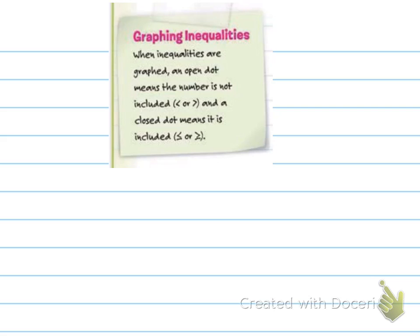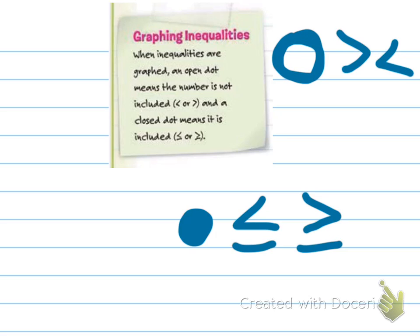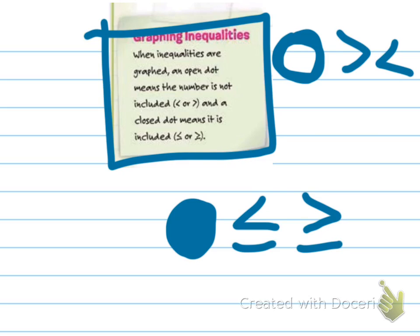When inequalities are graphed, an open dot means the number is not included — used for less than or greater than. A closed dot means the number is included — used for less than or equal to, or greater than or equal to. The equal sign is what determines whether we use a closed or open circle. Closed dot means we have the equal sign; open means we do not. Open circle includes all surrounding numbers but not that one; closed circle includes that one too. Please memorize this — you'll use it for years to come.